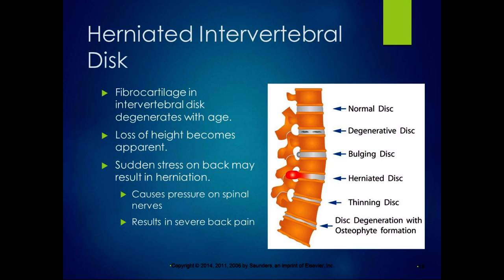Herniated intervertebral disc is another aging-related condition. The fibrocartilage in the intervertebral disc degenerates with age — the annulus fibrosis degenerates, you get loss of height, and sudden stress on the back might result in herniation where the nucleus pulposus bulges or gets extruded out of the annulus fibrosis, causing pressure on spinal nerves and severe back pain. Interestingly, probably everybody over the age of about 35 has some bulging discs. Whether they herniate depends on the stresses in your back — bulging discs don't necessarily cause pain, but chances are good you have one somewhere.